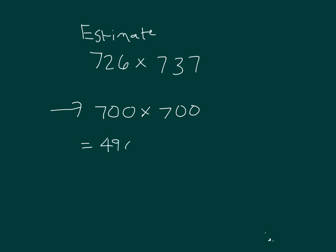Hundreds times hundreds. Place our zeros. 490,000. The estimated product is 490,000.